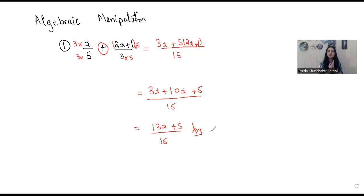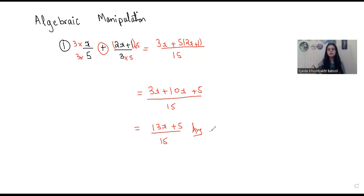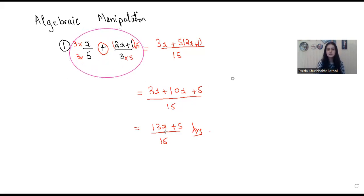The idea behind algebraic manipulation is just this: you would be having an algebraic expression — it could be quadratic, linear, or cubic. At your level, it could be linear. You are just supposed to simplify that. If you have two fractions, things would be a bit complicated. But if you have a simple algebraic statement, you're just supposed to add the like terms and write them together, and that would give you a simplified version of what you had originally.